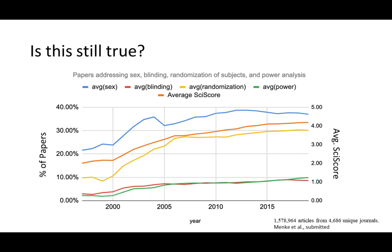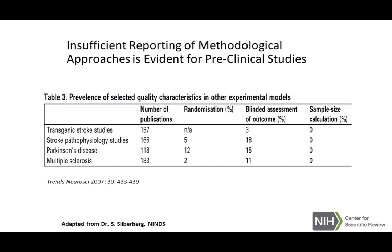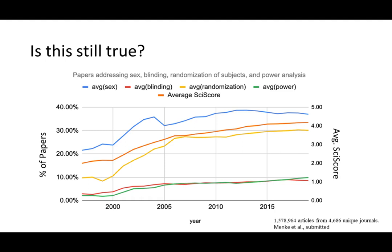We looked at sex as a biological variable, the number of blinding statements, randomization, power calculations, and something called a size score — basically adding up whether the paper addressed blinding, sex, randomization, power, and other factors. We looked at the percentage of papers that actually addressed those different things. In 1997 it was about 10% blinding and 10% randomization, with about 3–4% blinding on average across roughly 1.5 million articles.